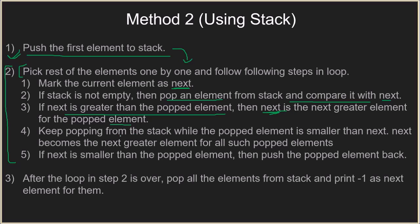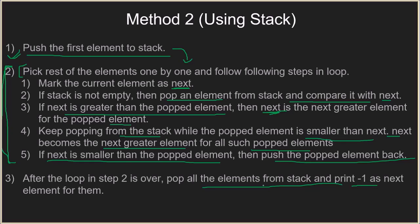We keep popping from the stack while the popped element is smaller than next, and next becomes the next greater element for all such popped elements. If next is smaller than the popped element, we push the popped element back into the stack. Once we have printed all elements which have a next greater element, we pop out all remaining elements from the stack and print minus 1 as the next greater element for them, since only elements without a next greater element will remain.